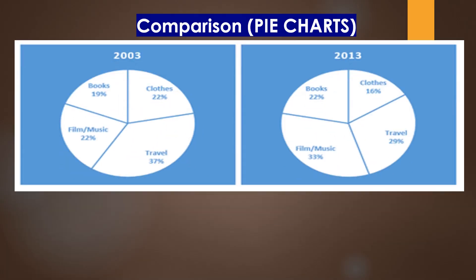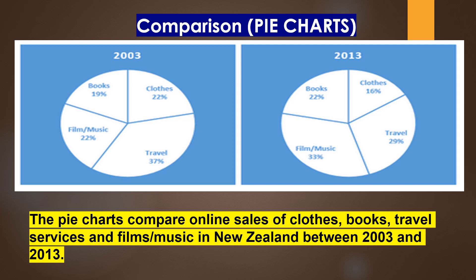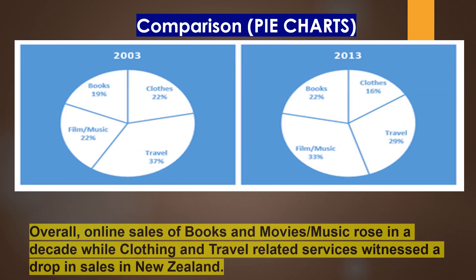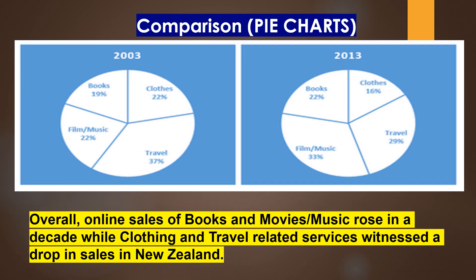Let's take a look at the two pie charts — one belongs to 2003 and the other is year 2013. Let me present an ideal answer that can help you score a good band. The pie charts compare online sales of clothes, books, travel services, and films or music in New Zealand between 2003 and 2013. Overall, online sales of books and movies or music rose in a decade, while clothing and travel-related services witnessed a drop in sales in New Zealand.